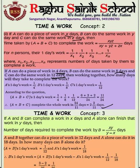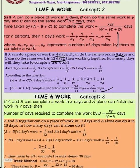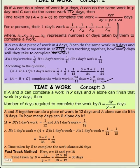This is a very important concept for three men working together. Next, concept number three: If A and B can complete the work in X days, and A alone or B alone can finish the work in Y days, then number of days required to complete the work by B is X into Y by Y minus X.